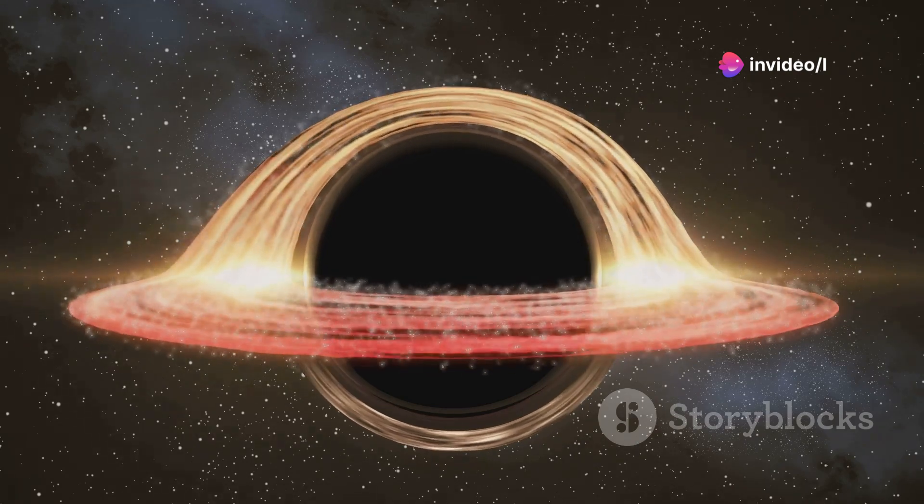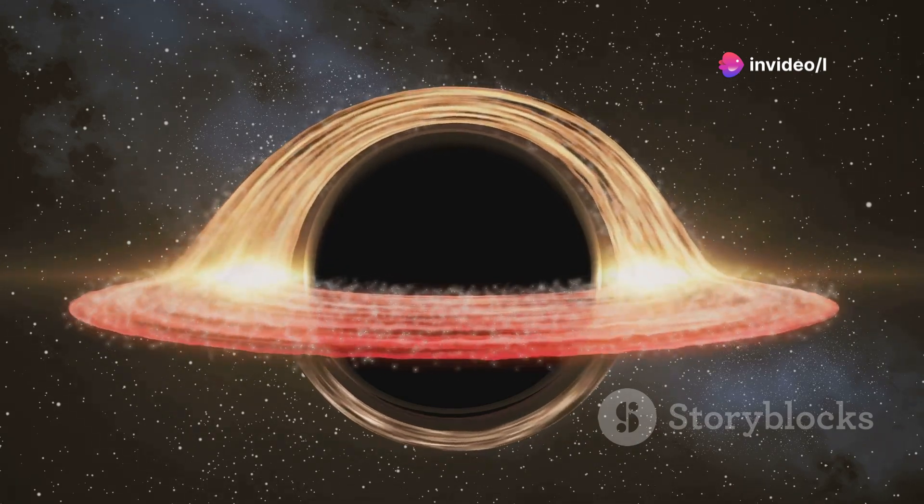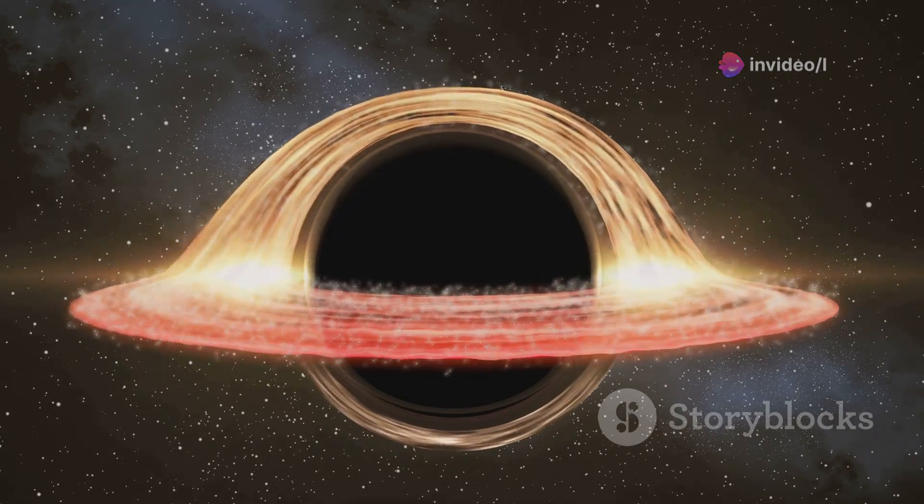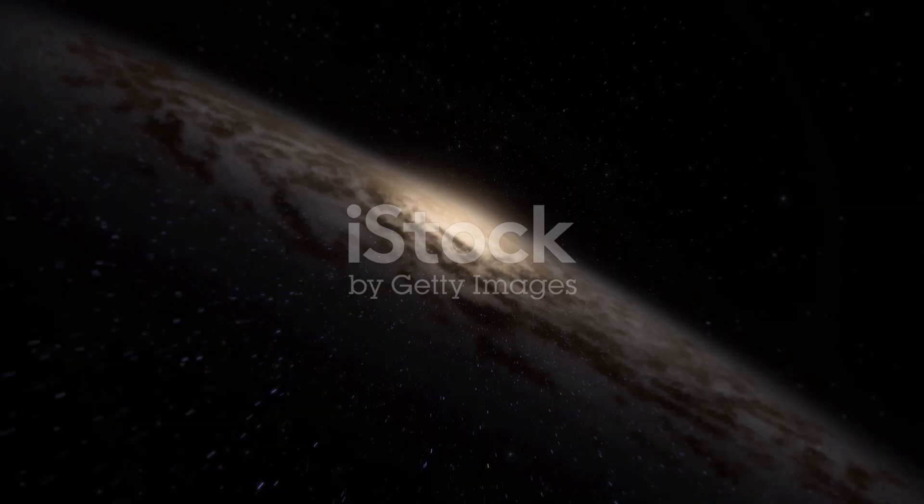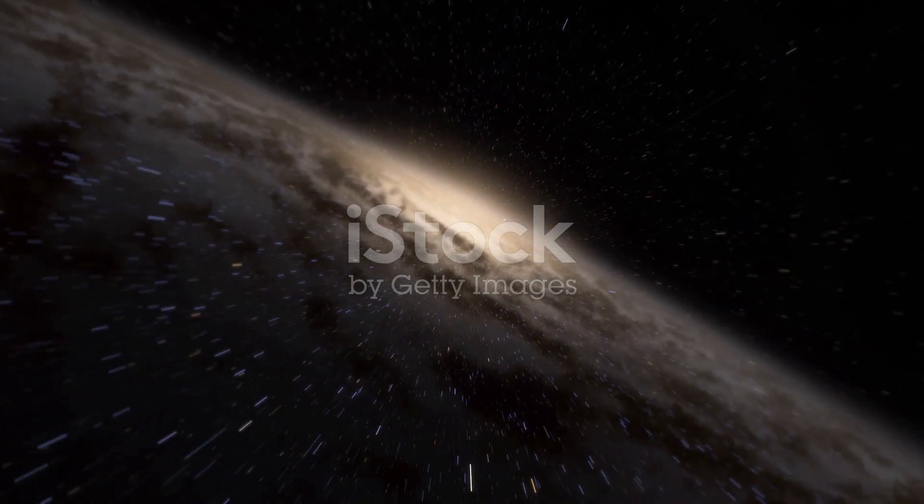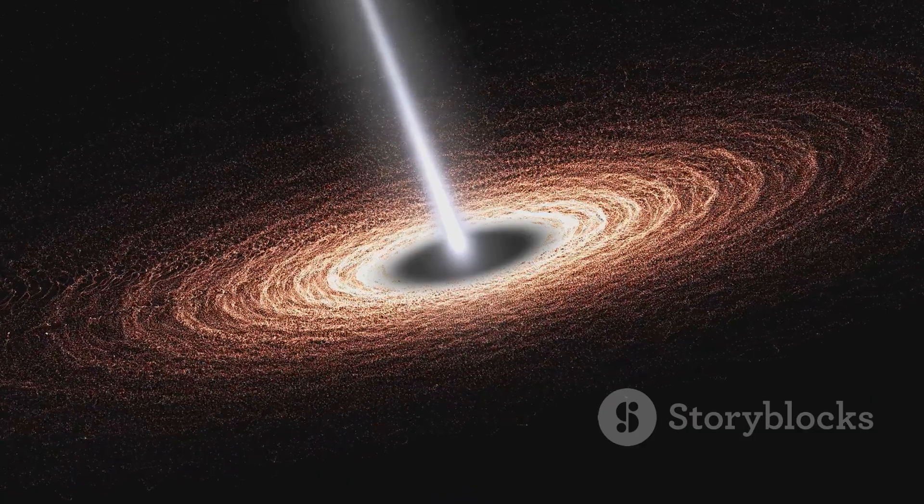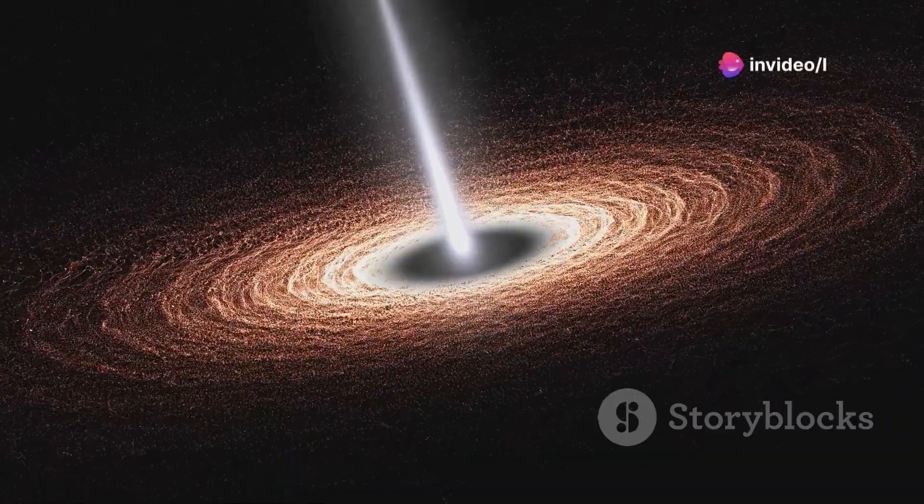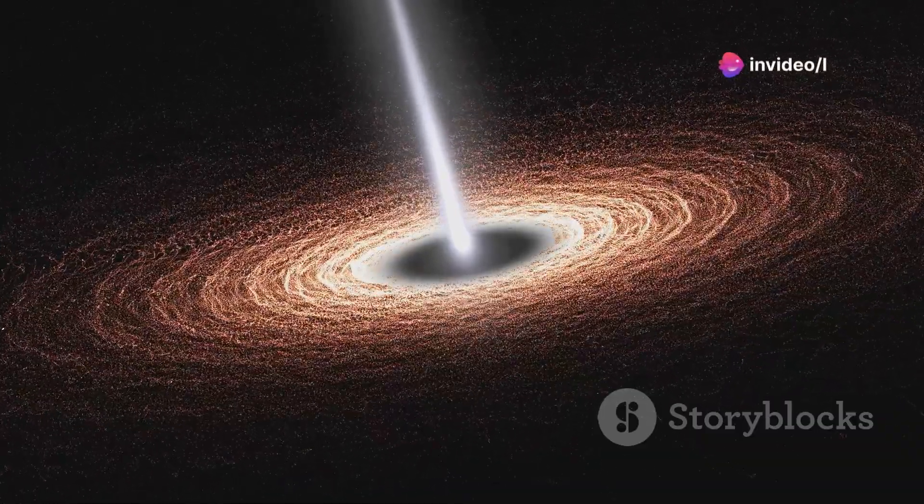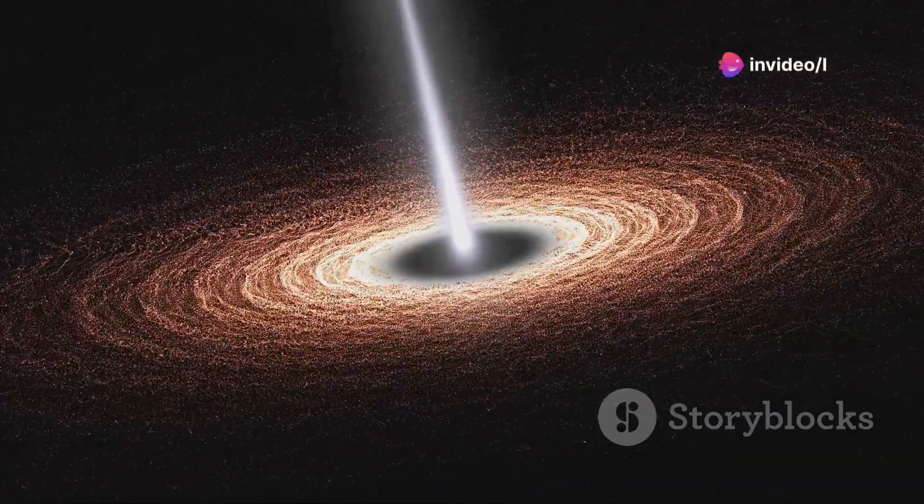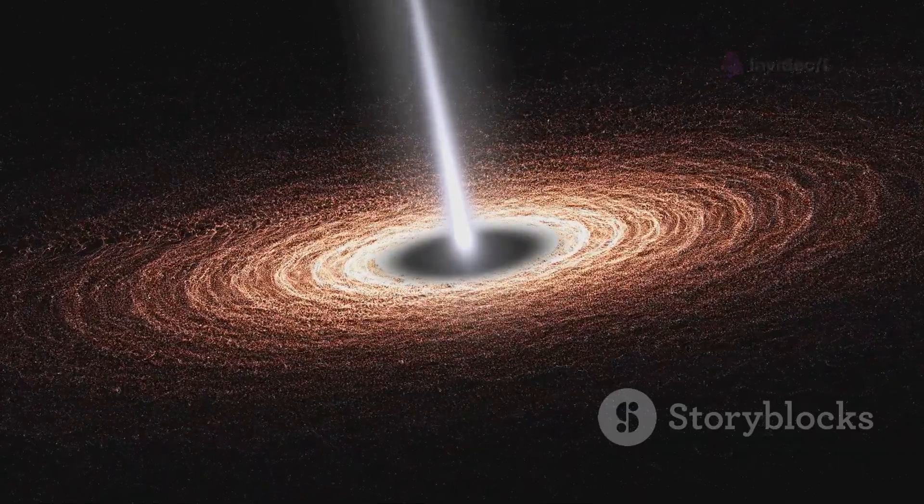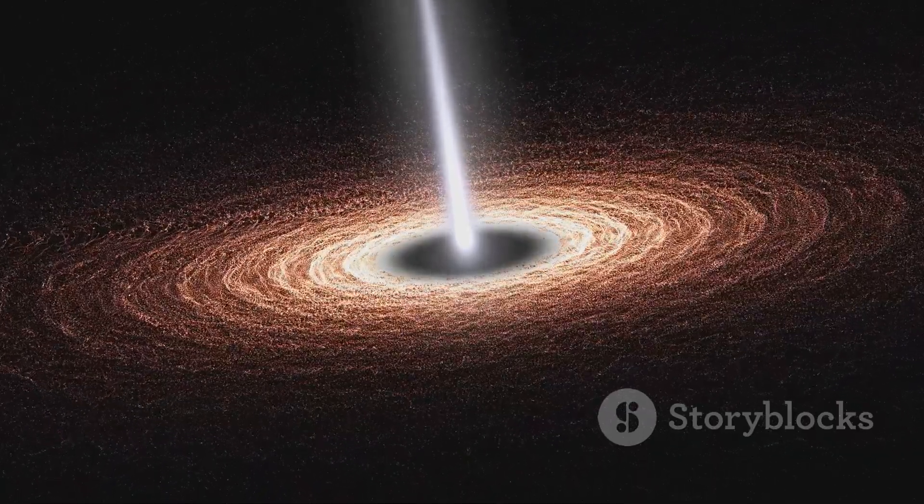The intense gravitational pull of a supermassive black hole can influence the motion of stars and gas within its host galaxy, shaping its structure and dynamics. Additionally, as matter spirals into the black hole, it forms an accretion disk, releasing vast amounts of energy in the form of radiation. This process can trigger powerful jets of particles that extend far beyond the galaxy itself, impacting the intergalactic environment.